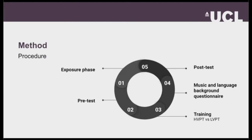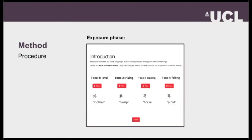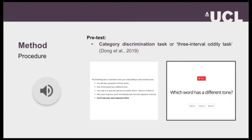In terms of procedure, we have five stages, of which the main ones would be the pre-test, the training, and the post-test. First we have the exposure phase, which involved introducing participants to Mandarin tones because they had no prior experience with them. They were explicitly told that Mandarin is a tonal language that uses four tones to distinguish word meanings. Then they proceeded to the pre-test to test their initial ability on tone discrimination.